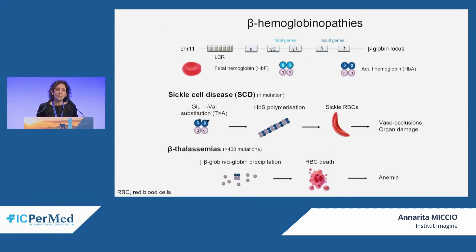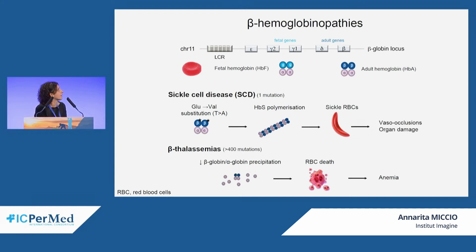Beta-hemoglobinopathies are diseases affecting the production of the beta-globin chain of the adult hemoglobin tetramer, which is composed of two beta-globin chains and two alpha chains. During development, all the beta-like globin genes are sequentially expressed. In particular, soon after birth, the fetal gamma-globin genes gamma-1 and gamma-2 are silenced, and the adult beta-globin gene is predominantly expressed. During fetal life we have fetal hemoglobin, composed of two gamma chains and two alpha chains, while adult hemoglobin predominates in adult life.